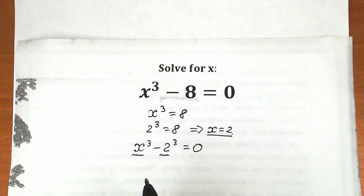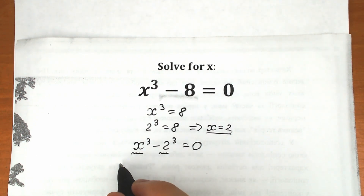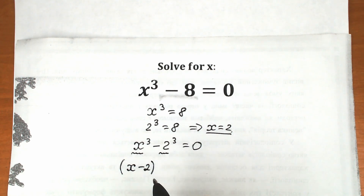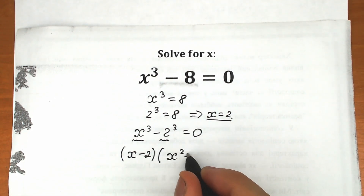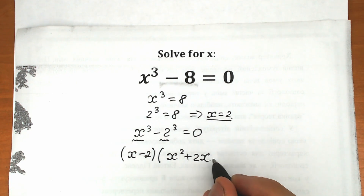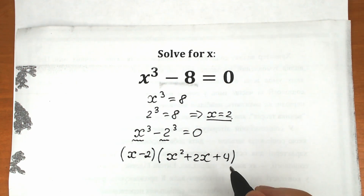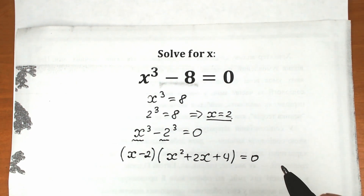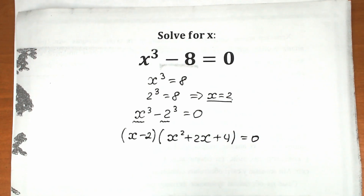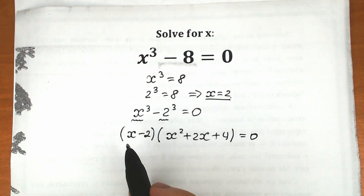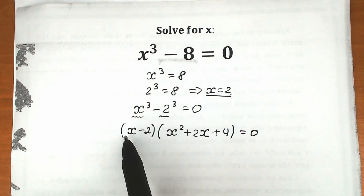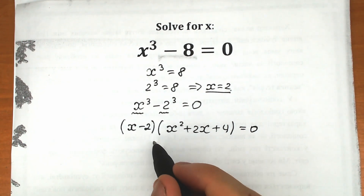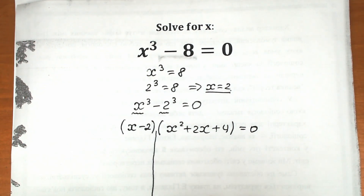Now let's remember the formula for difference of cubes from school. In our case, this equals x minus 2, times x square plus 2x plus 4. According to this formula we can write it like that. If we have a product of two parentheses equal to 0, it implies the first parenthesis equals 0 and the second parenthesis equals 0, so we separate our solutions.